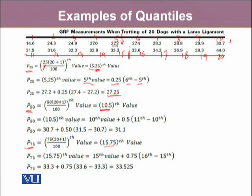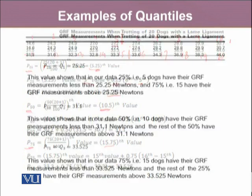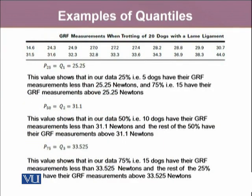We already know that 1st quartile is equal to the 25th percentile, and it turned out to be 25.25. This value can be interpreted as that in our data, 25 percent, which means 5 dogs have their GRF measurements less than 25.25 Newtons, and since in our data we have 20 observations, 5 is actually the 25 percent of our overall data. And 75 percent, which is going to be 15, therefore 15 dogs have their GRF measurements above 25.25 Newtons.